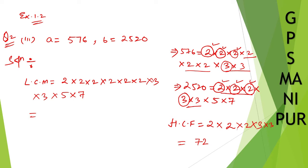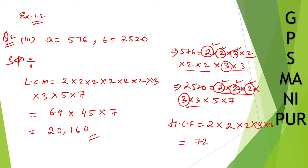Now let us multiply: 2 into 2 is 4, 4 into 2 is 8, 8 into 2 is 16, 16 into 2 is 32, 32 into 2 is 64. Then 3 into 3 is 9, 9 into 5 is 45. So we have 64 into 45 into 7. The answer would be 20160 — this is your LCM. You can calculate and check whether I am right or not.